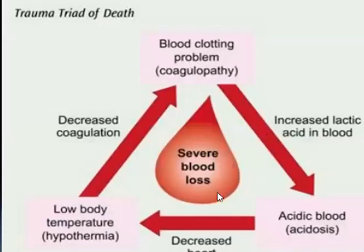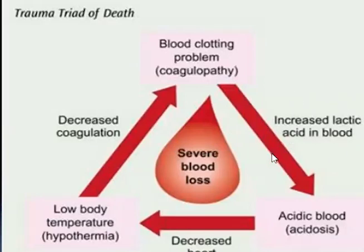In severe blood loss, the main features are decreased heart performance, hypothermia (low body temperature), blood clotting problems (coagulopathies), and increased lactic acid in the blood — because body cells go into a state of acidosis. This combination of hypothermia, acidosis, and decreased coagulation is called the trauma triad of death.